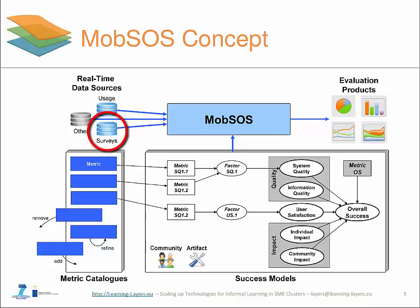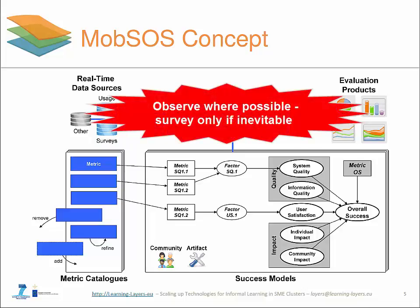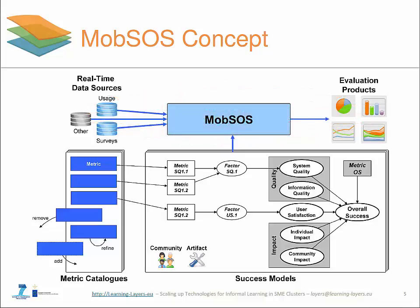Survey data allows us to capture every other aspect of success that is either subjective or not contained in usage or other data. Thereby, Mobsource follows the principle: observe where possible, survey only if inevitable, to minimize obtrusiveness and assessment overhead.